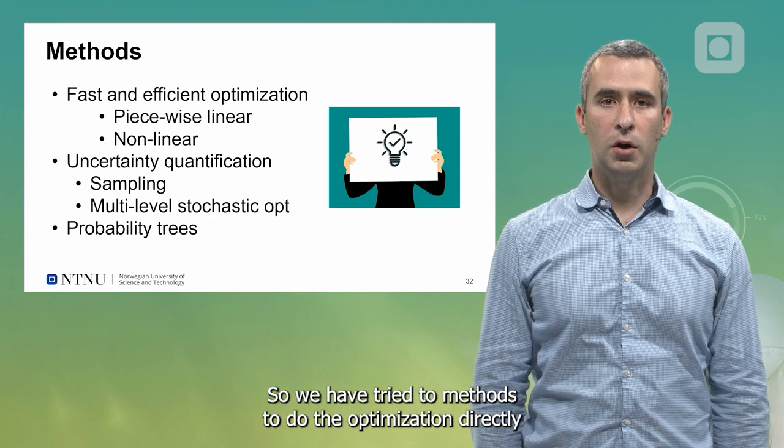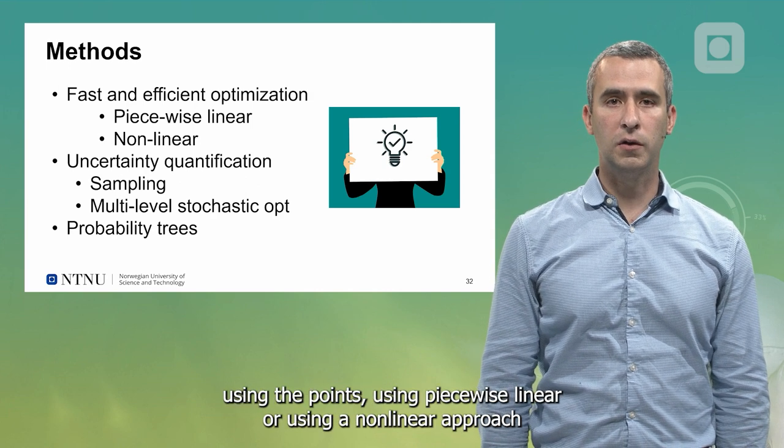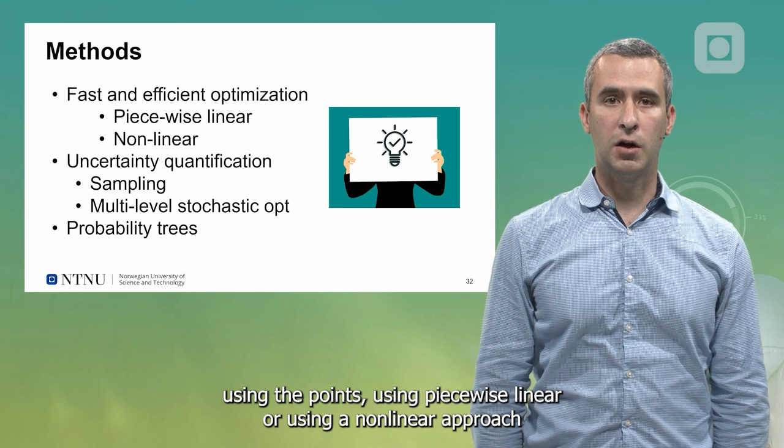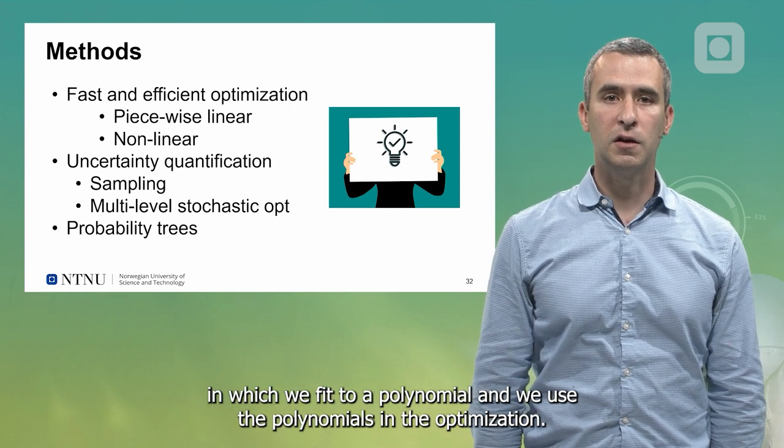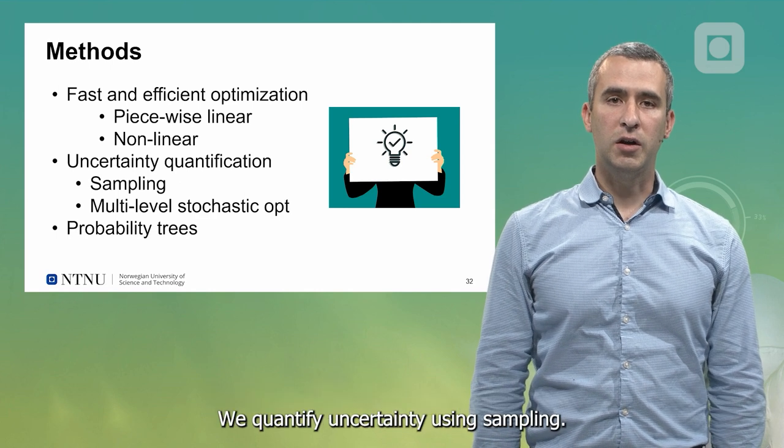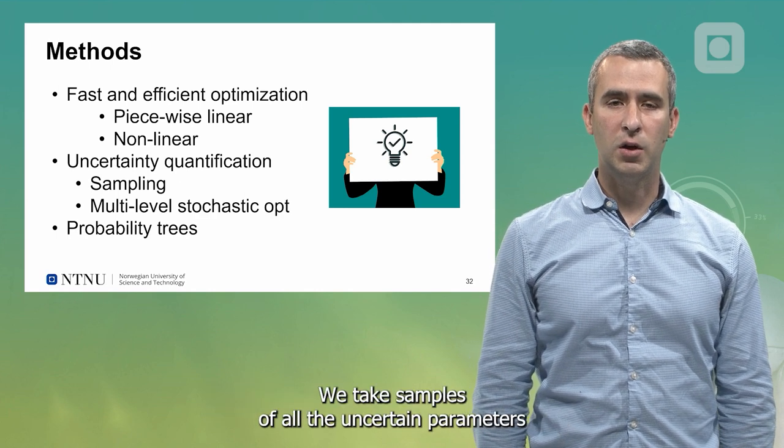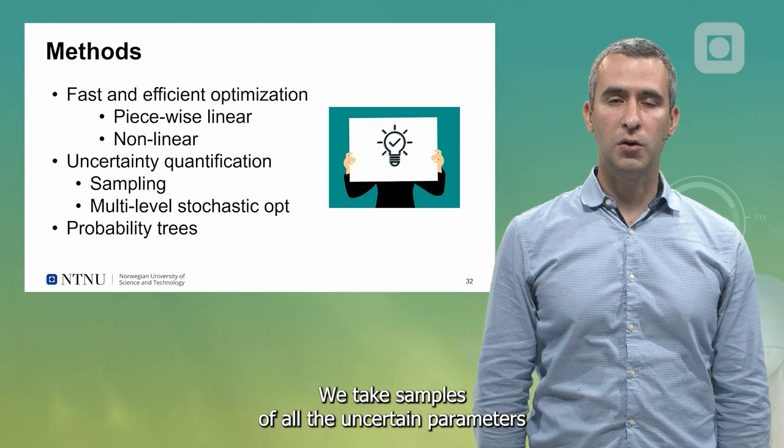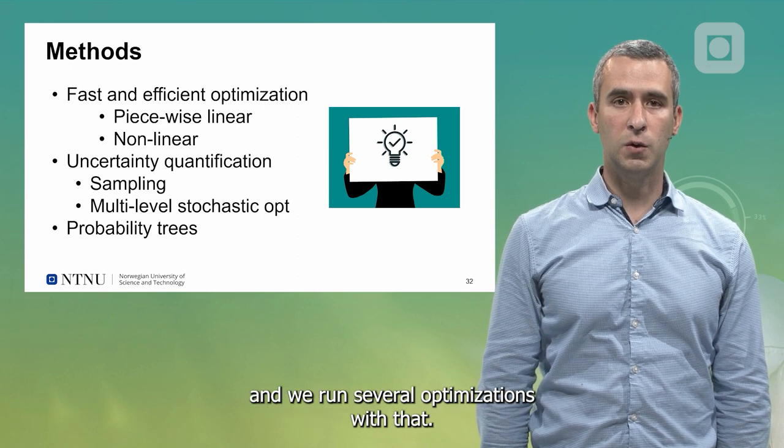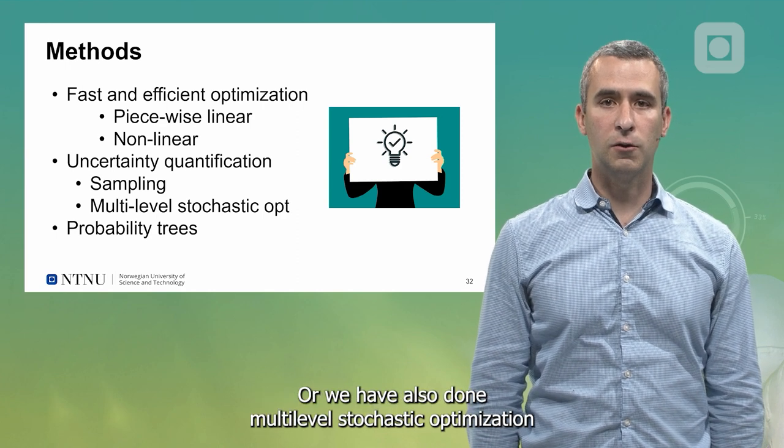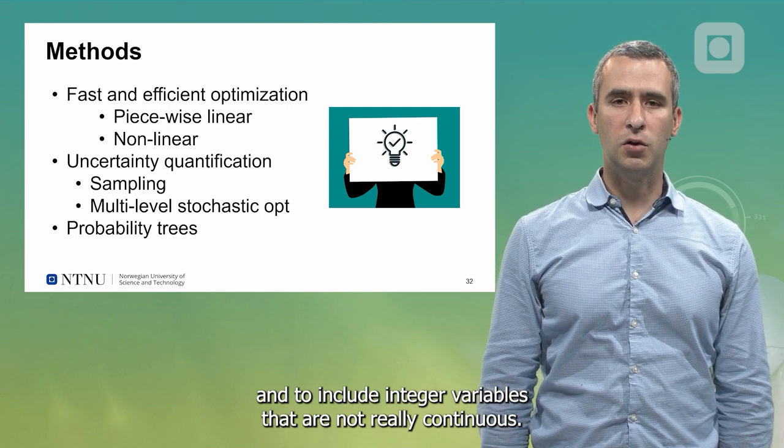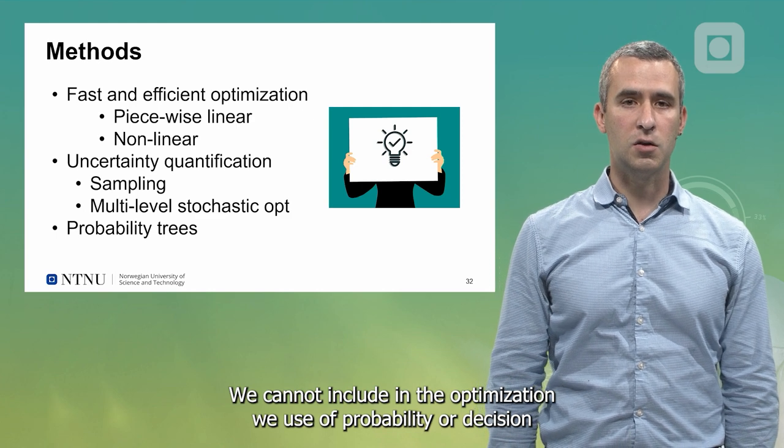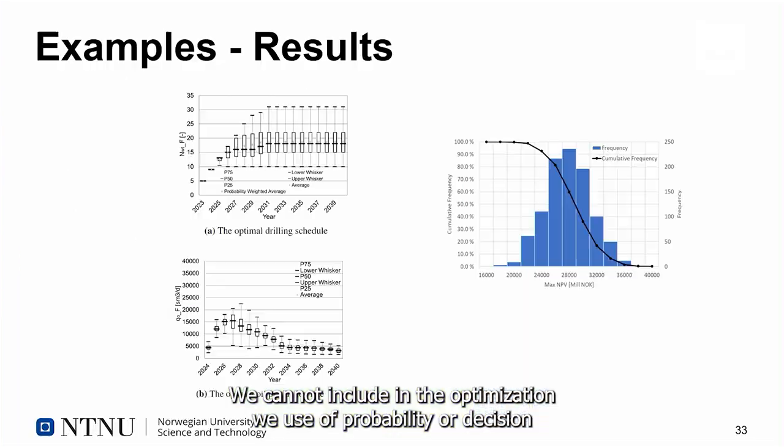We have tried two methods to do the optimization, directly using the points with piecewise linear, or using a non-linear approach in which we fit to a polynomial and use the polynomials in the optimization. We quantify uncertainty using sampling. We take samples of all the uncertain parameters and run several optimizations with that. Or we have also done multi-level stochastic optimization. To include integer variables that are not really continuous, we use probability or decision trees.